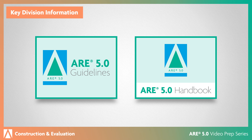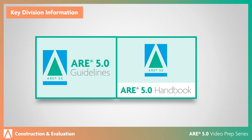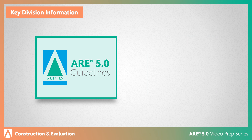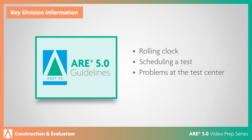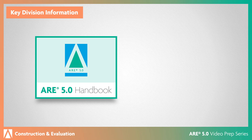Be sure to review the latest ARE 5.0 Guidelines and ARE 5.0 Handbook, both on the NCARB website. The guidelines contain critical information about ARE 5.0 policies, including the rolling clock, scheduling a test, problems at the test center, and receiving your score.